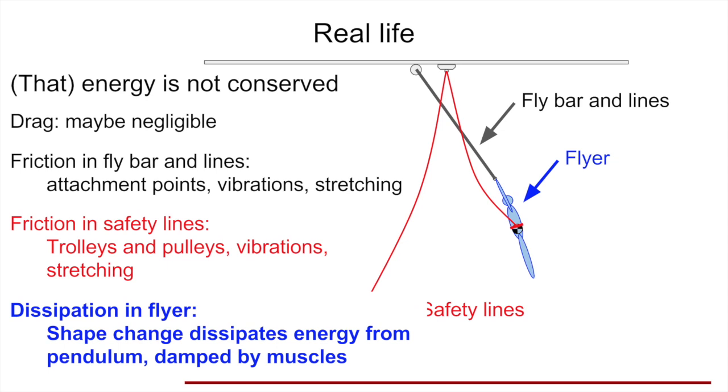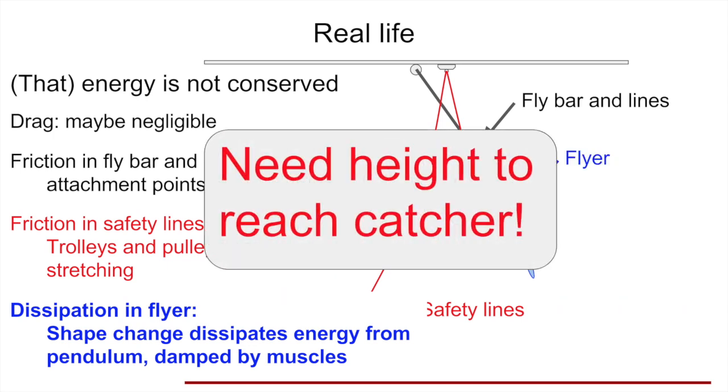And finally, and in some ways most preventably, there's potential for dissipation in the flyer. Anytime the flyer changes shape, that energy comes from the potential plus kinetic energy that I showed earlier, so that's sucking away energy from the pendulum, and then it ends up being damped by the muscles. But anytime you lose that potential and kinetic energy that are really involved in the pendulum, you lose height, and you need height to be able to reach the catcher, so you really want to prevent that if at all possible.